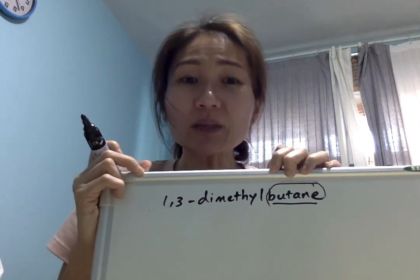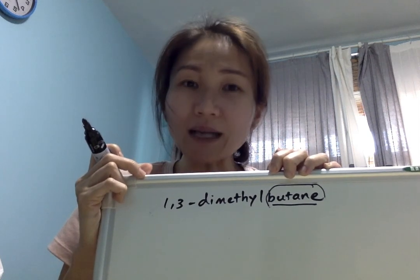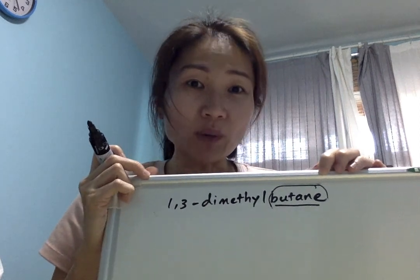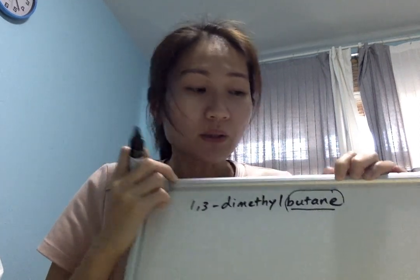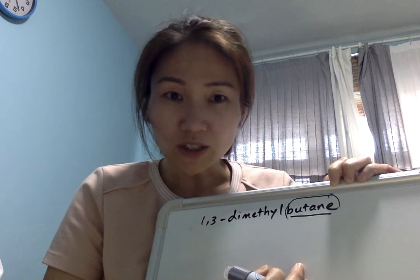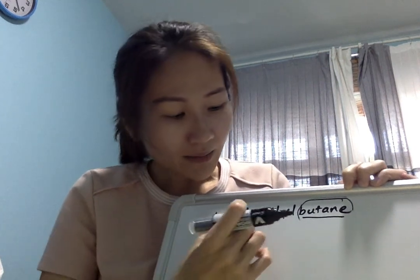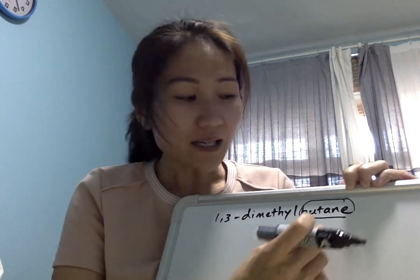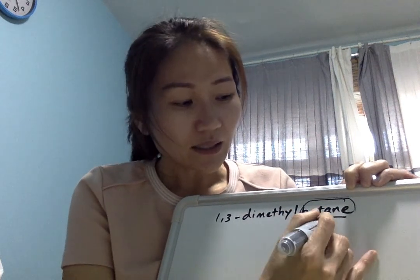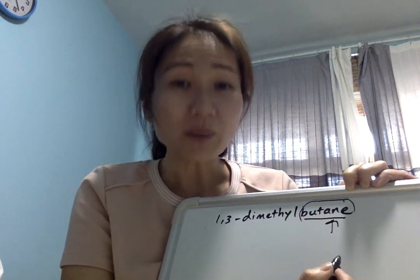Hello everybody, today we are going to look at why this is not the correct IUPAC name. I'm gonna try to draw this structure, 1,3-dimethylbutane. As the name suggests, the longest chain or parent chain is made up of four carbon atoms.